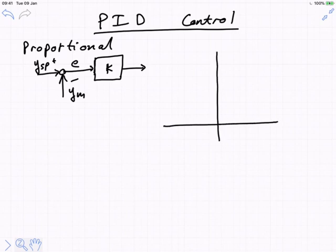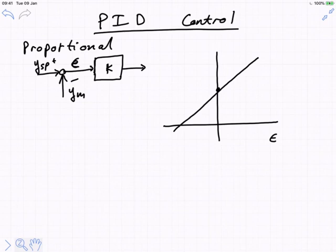In the textbook, the error signal is shown as epsilon. The output is called P and there is a steady-state value P-bar. We should actually label this — you'll see the textbook has this labeled as P, but in terms of our deviation variable convention it's P with a steady-state offset.